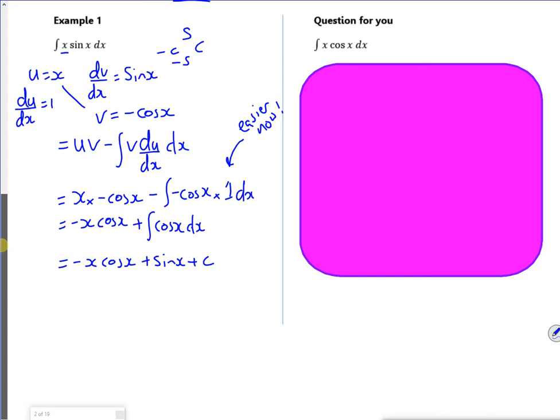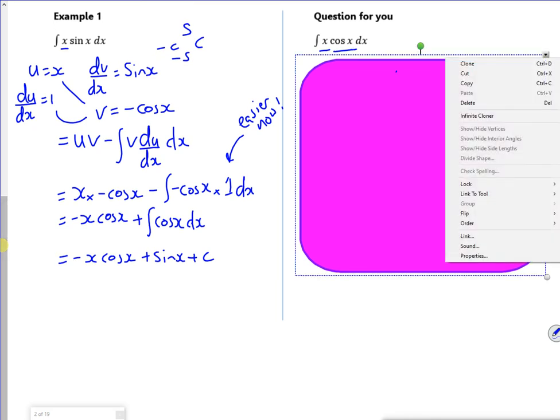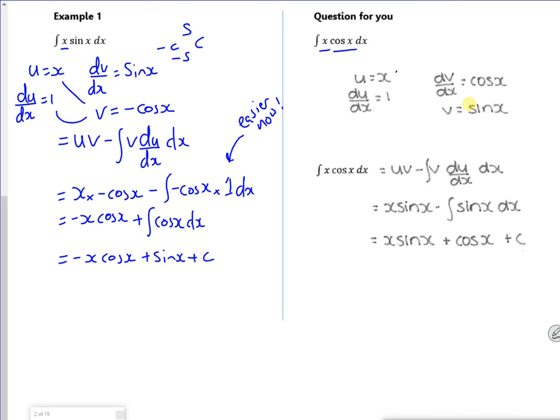There you go. So I do the uv minus the integral of v du dx. It's important for you to have a go at. Set u as x, set dv dx as cos x, and have a go. There you go. Hopefully you got that.